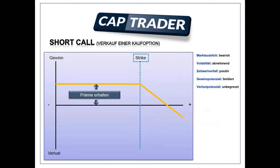Es gibt einen sehr großen Unterschied zwischen Optionsscheinen und Optionen. Bei Optionsscheinen haben Sie ein Emittentenrisiko und der Emittent stellt auch die Kurse – zum Beispiel eine Bank. Bei einer Option gibt es immer nur einen Preis pro Basiswert und Laufzeit, und dieser wird über die Börse gehandelt. Das ist ein eklatanter Unterschied zu Optionsscheinen.